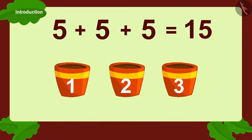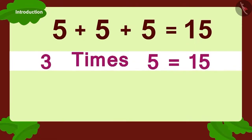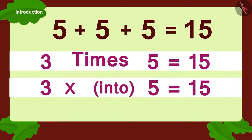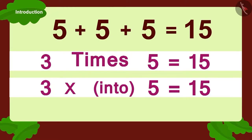Now, how can we write it in a different form? Three times five, or three multiplied with five.